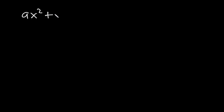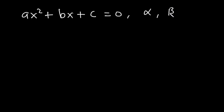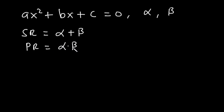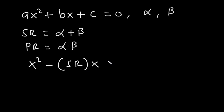Now, given a quadratic equation ax squared plus bx plus c is equal to zero with roots alpha and beta, then the sum of roots is alpha plus beta and the product of roots is equal to alpha times beta. So, having obtained this, we can generate a quadratic equation using the formula x squared minus the sum of roots times x plus the product of roots is equal to zero.